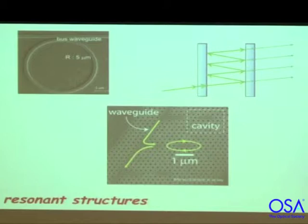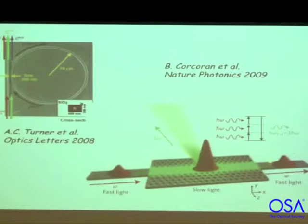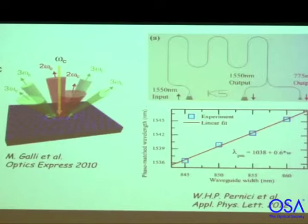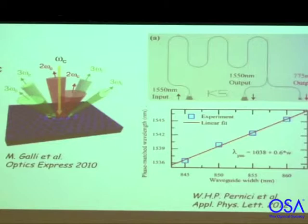Here are some examples. The group at Cornell used a ring resonator for four-wave mixing: they put in some signal and a strong pump and get some idler out from a silicon ring. Here's an example of third harmonic generation using a photonic crystal structure. A group in Italy has done both second and third harmonic generation in one of these photonic crystal structures. A group at Yale built channel structures and showed that by adjusting the waveguide width, you adjust the effective index of refraction at both ω and 2ω differently, so by adjusting the waveguide width you can get phase matching and optimal performance at different wavelengths — a flexibility you don't have with bulk crystals.